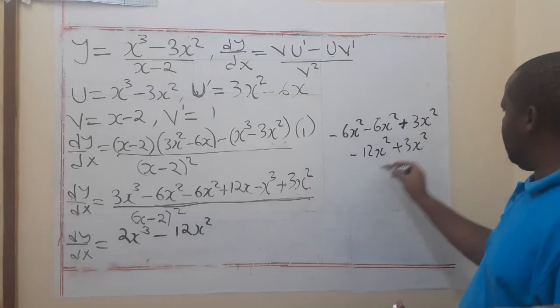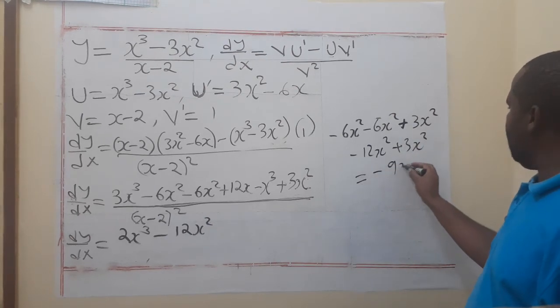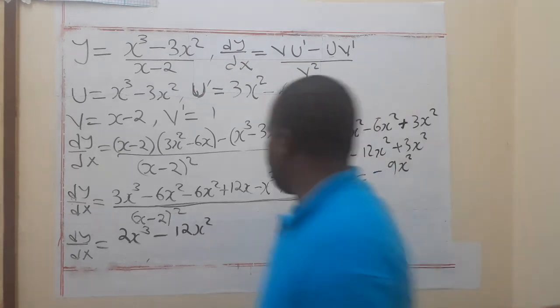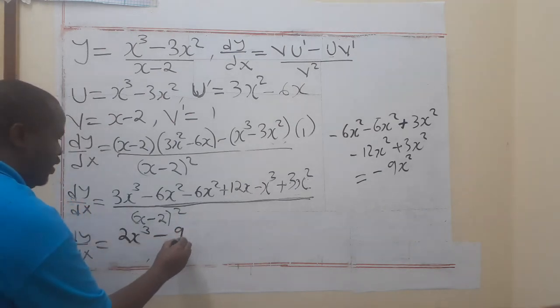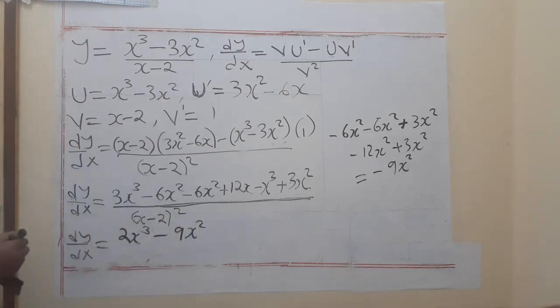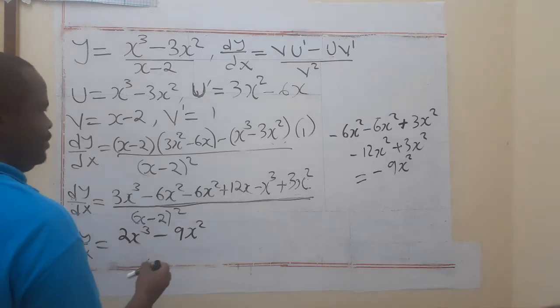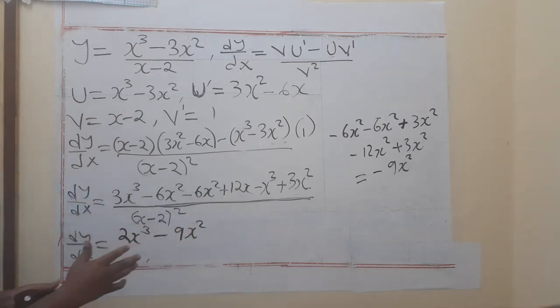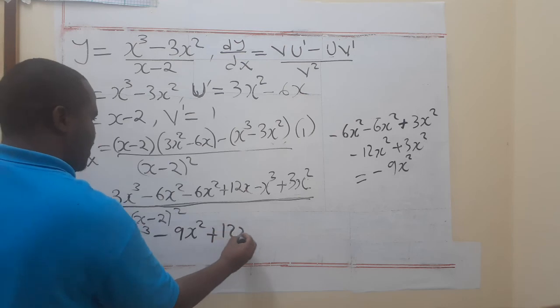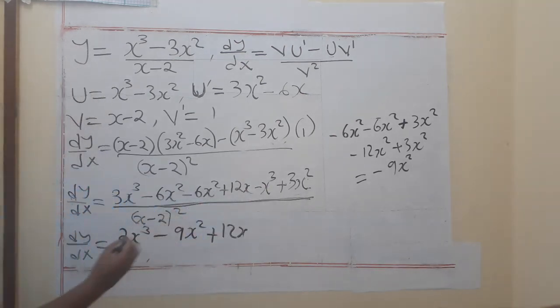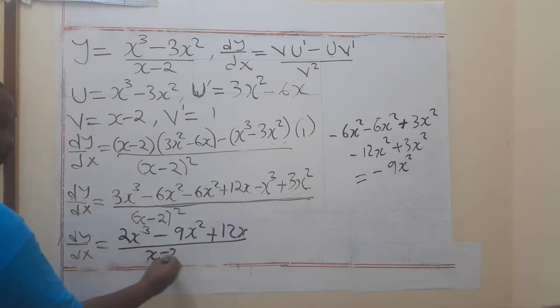What have we left? I think there is plus 12x here. Just have to take your time, there is nothing complicated, but you can easily miss. So it's plus 12x. This has been used - 1, 2, 3 have been used. We divide everything now by x minus 2 to the power 2. And that is our answer.